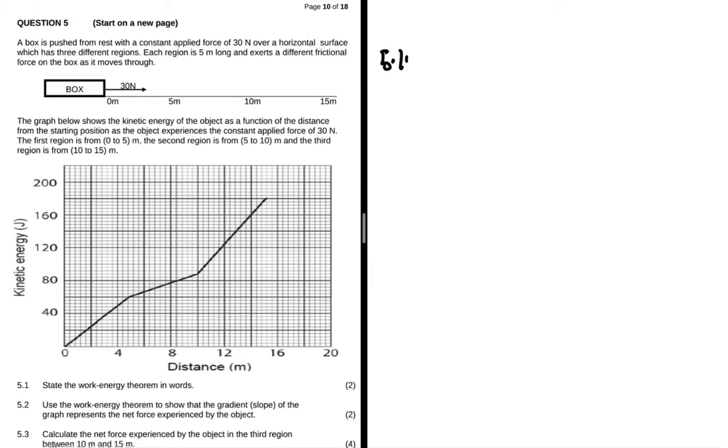Question 5.1 says state the work-energy theorem in words. The work-energy theorem essentially says that work net equals change in EK. What this is telling us is that the work net done on an object equals the object's change in kinetic energy.